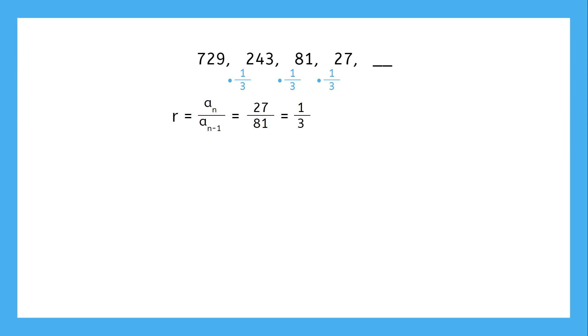Now that we know the common ratio, what's the next term? The 5th term will be the 4th term times 1/3, which is 9. Pause the video and see if you could find the common ratio and the next two terms in this sequence yourself.